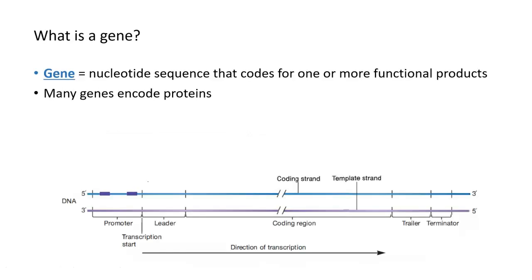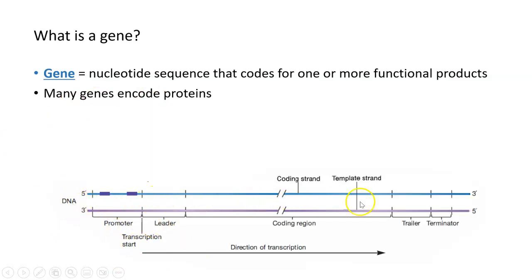In order to understand gene structure, first we have to talk about what a gene is. The definition of a gene is a nucleotide sequence in the DNA that codes for one or more functional products, and those functional products many times are proteins. You can see the structure in the DNA of a protein coding gene.